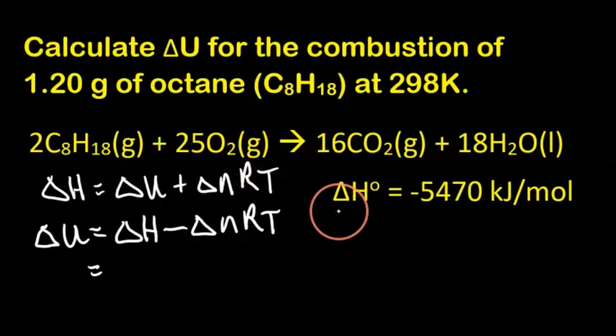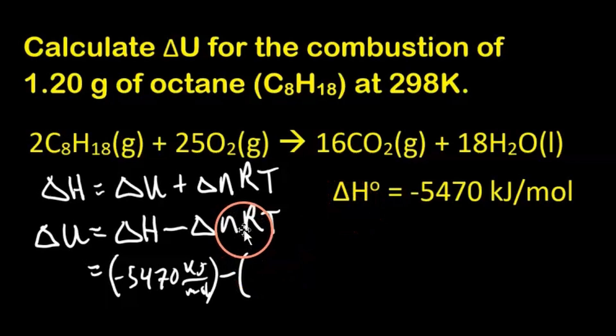We'll plug in what the change in enthalpy is: negative 5,470 kilojoules per mole minus the products minus the reactants of the gaseous, only the gaseous compounds because the gases are what creates the pressure or reduces the pressure. You might be wondering why this water is not a gas, so when this reaction occurs, we do produce gaseous water, but at 298 Kelvin, the water is a liquid.